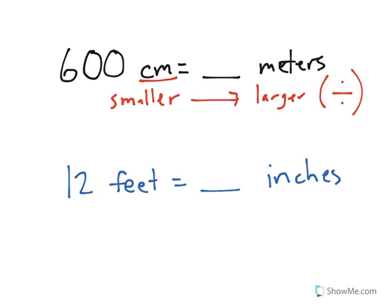Because our number, if we have 600 of a super small unit, and we're then going to change it to a large unit like a meter, the number has to get smaller.